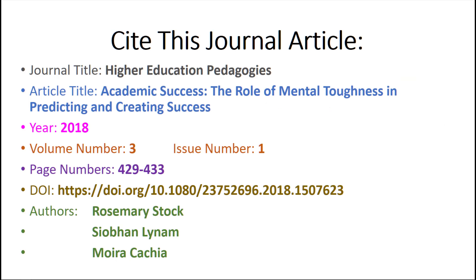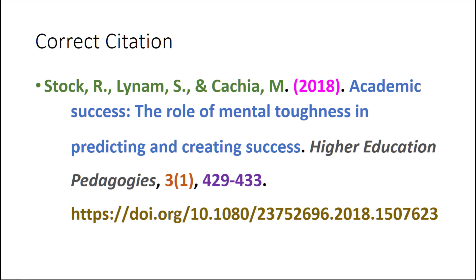Now here's a chance to try it on your own. This is an example of a journal article and I have color coded the different pieces of information. Now you try to make a journal citation yourself. Feel free to pause the video and make your attempt. Here is the correct citation color coordinated for your convenience.